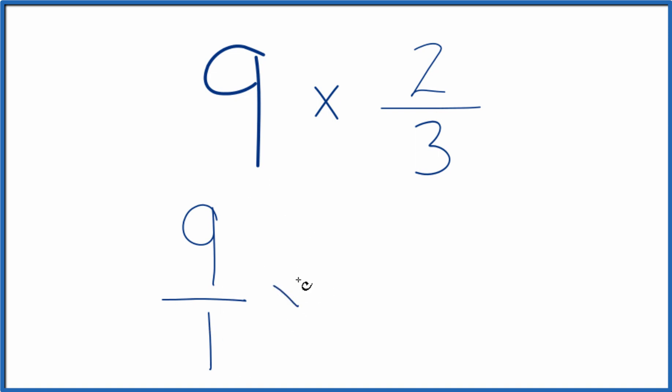and we can multiply that times 2 thirds. When we multiply fractions, we multiply the numerator, then the denominator.